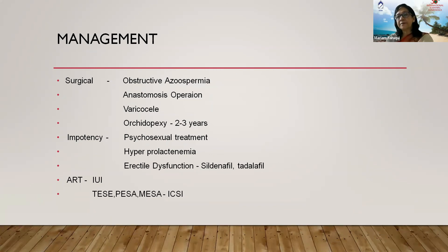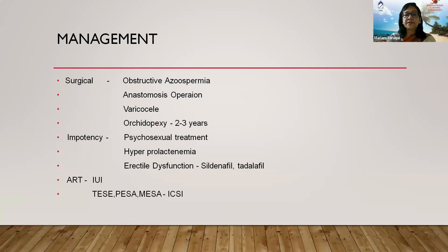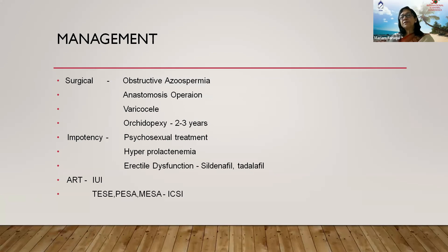IUI is helpful in severe oligospermia, teratospermia, or poor sperm motility. For non-obstructive azoospermia, we can retrieve sperm from the testis via TESE (testicular sperm extraction), PESA (percutaneous epididymal sperm aspiration), or micro-TESE. These sperm can be used in ICSI — intracytoplasmic sperm injection — which is a revolutionary treatment for male infertility, including severe oligospermia and obstructive azoospermia, allowing many men to father children.